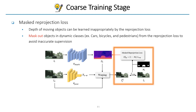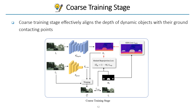We also mask out dynamic objects from the reprojection loss to avoid inaccurate supervision in the coarse training stage. Using instance segmentation predictions, cars, bicycles, and pedestrians are excluded. In the coarse training stage, we use masked reprojection loss and our GDS loss to align depth of dynamic objects based on the ground contacting prior.